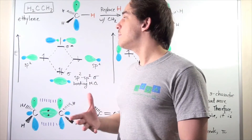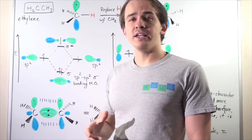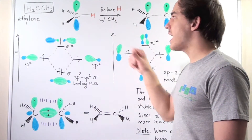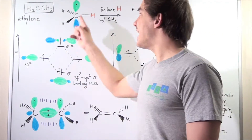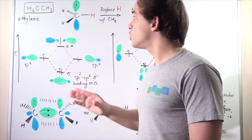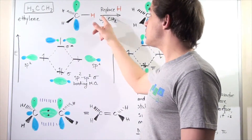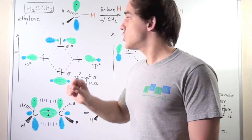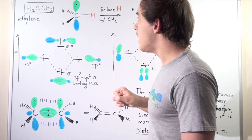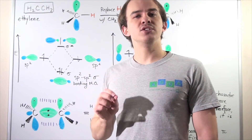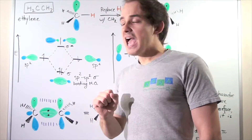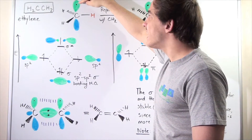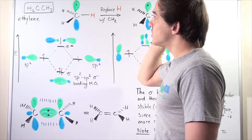Let's begin by building this ethylene molecule using a methyl radical. Recall that a methyl radical is simply a carbon atom attached to three H atoms via sp2 hybridized orbitals. So each of these covalent sigma bonds are sp2 hybridized. We also have a pure 2p orbital that contains a single electron.